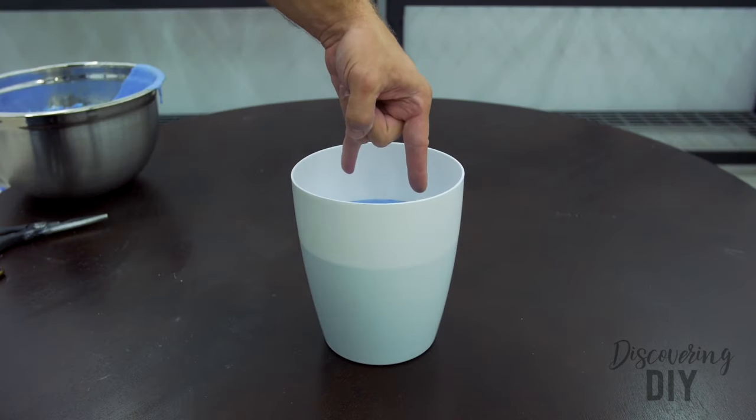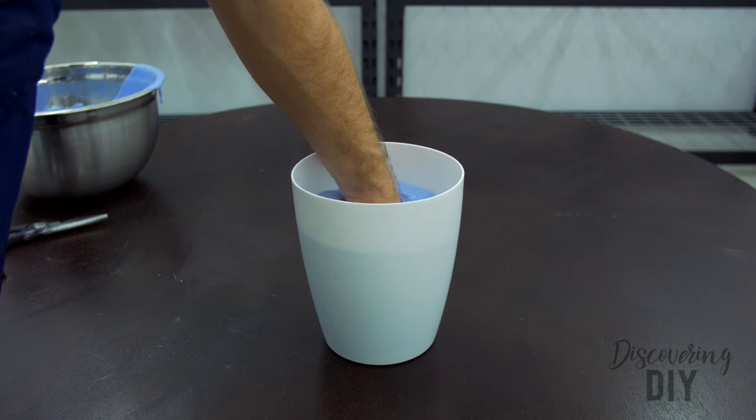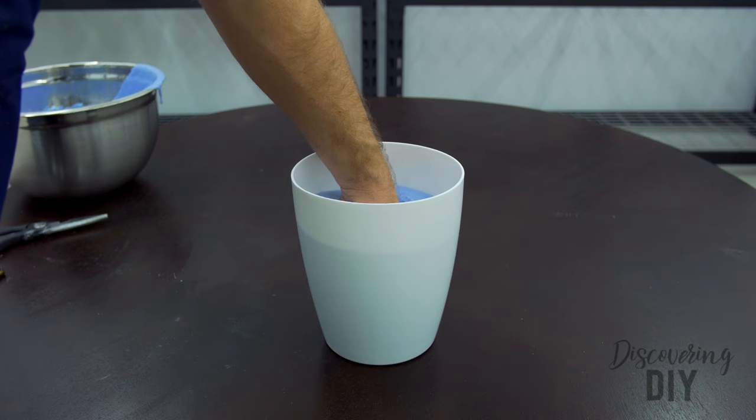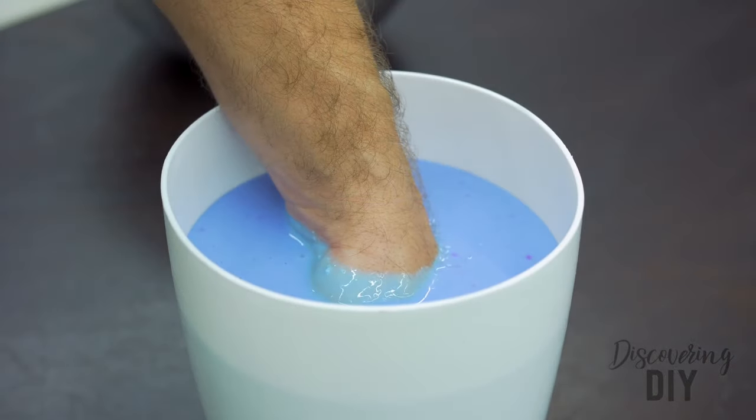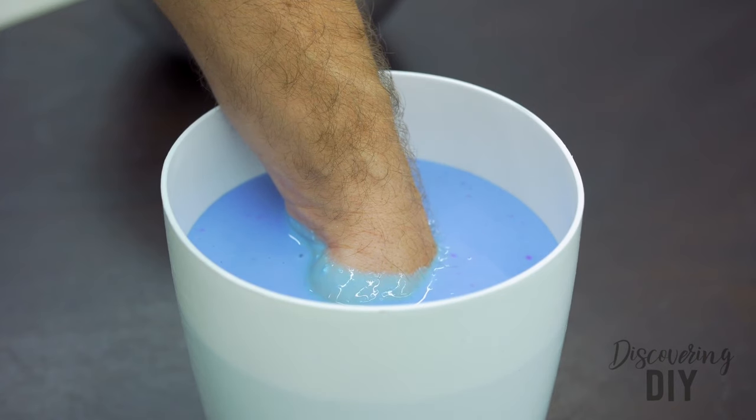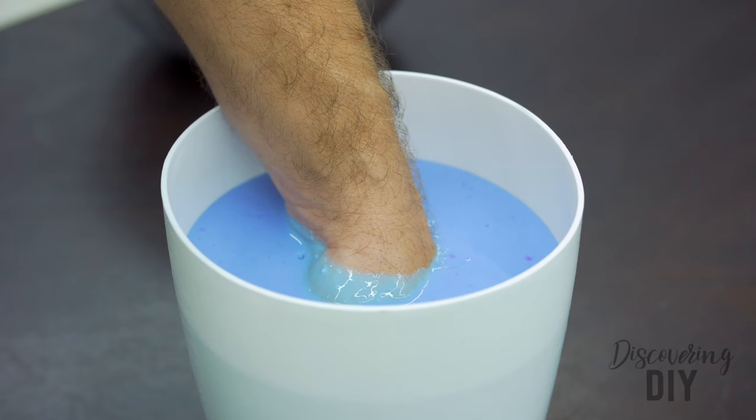Make your hands into the desired shape and insert them into the bucket of molding mixture until your hands touch the bottom, then pull them back up slightly from the bottom. Keep your hands still in the molding mixture for three to ten minutes until the material hardens and changes color from purple to blue.